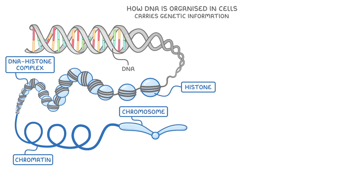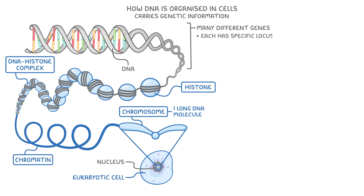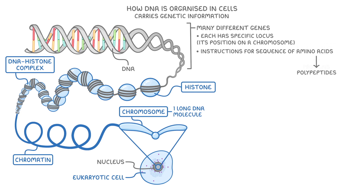Each chromosome is actually just one long DNA molecule that's compact enough to fit into the nucleus of a eukaryotic cell. Within these DNA molecules, there are many different genes, and each has a specific locus, which just means its position on a chromosome. Each of these genes contains the instructions for making a sequence of amino acids, which will then form the polypeptides that make up proteins. So we can define genes as sections of DNA that code for polypeptides.